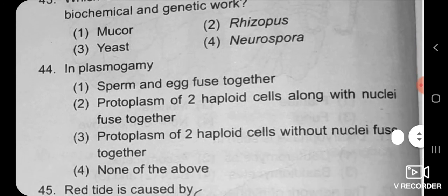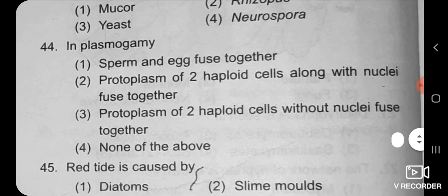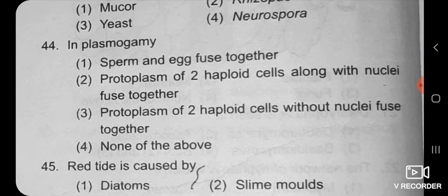Next MCQ on plasmogamy options: sperm and egg fused together; protoplasm of two haploid cells along with nuclei fused together; protoplasm of two haploid cells without nuclei fused together.